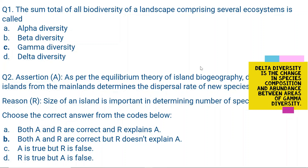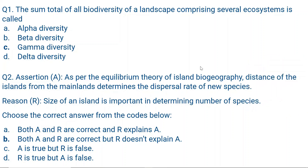Question number two. Assertion A: As per the equilibrium theory of island biogeography, distance of the islands from the mainland determines the dispersal rate of new species. Reason R: Size of an island is important in determining the number of species. Now Assertion A is correct — as per the equilibrium theory of island biogeography, distance of islands from the mainland determines the dispersal rate of species. But size of an island is also important.